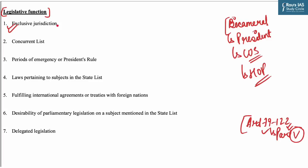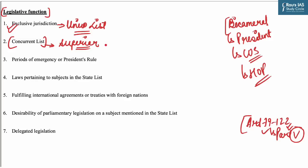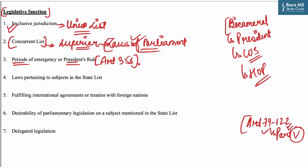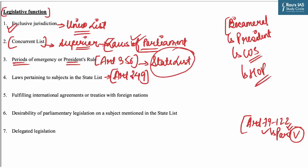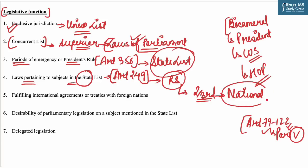Parliament has exclusive jurisdiction to enact laws concerning subjects in the Union List. With regard to the Concurrent List, Parliament holds superior authority, meaning that in cases of discord between laws of Parliament and those of state legislatures, the laws of Parliament prevail. During periods of emergency or President's Rule under Article 356, Parliament is empowered to legislate on matters in the State List. As per Article 249, Parliament can also enact laws on State List subjects if Rajya Sabha passes a resolution with a two-thirds majority deeming it necessary in the national interest.